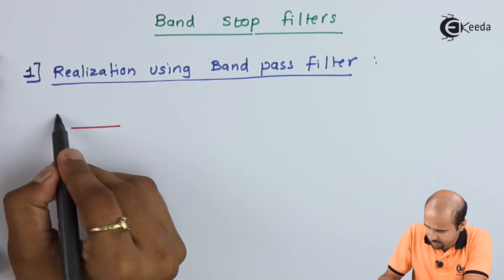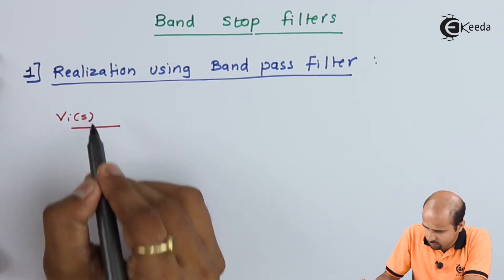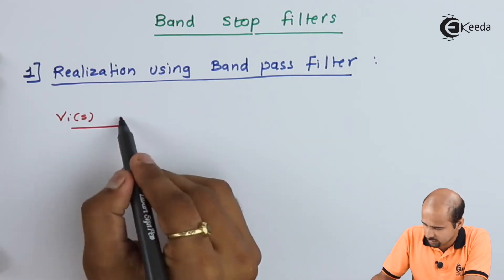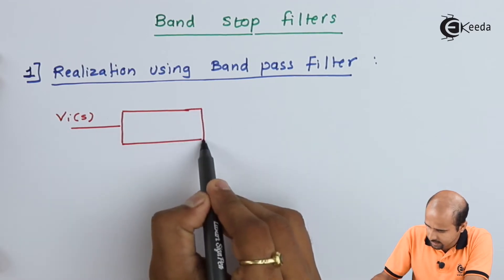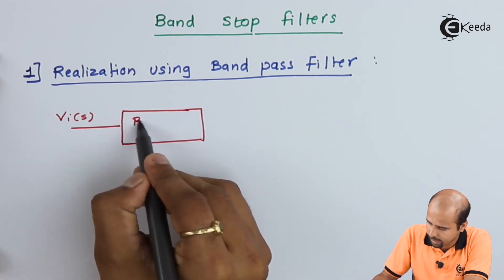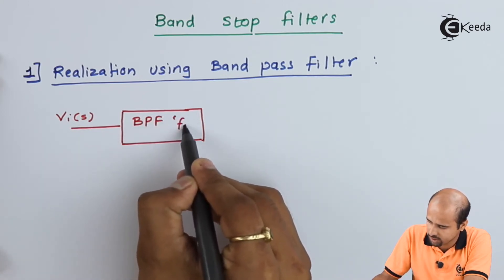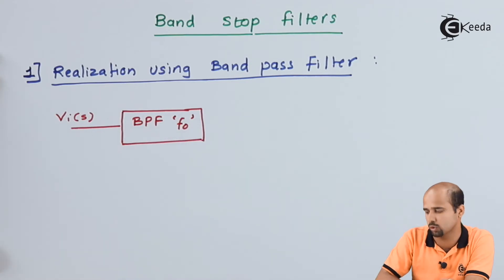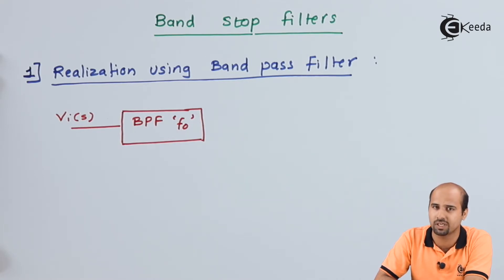This is my original signal, let's say Vi, and it is a function of signal frequency. Consider this box as a band pass filter with center frequency f0 — and specifically this is a narrow band pass filter. If we were considering a wide band pass filter, we would deal with FH and FL.